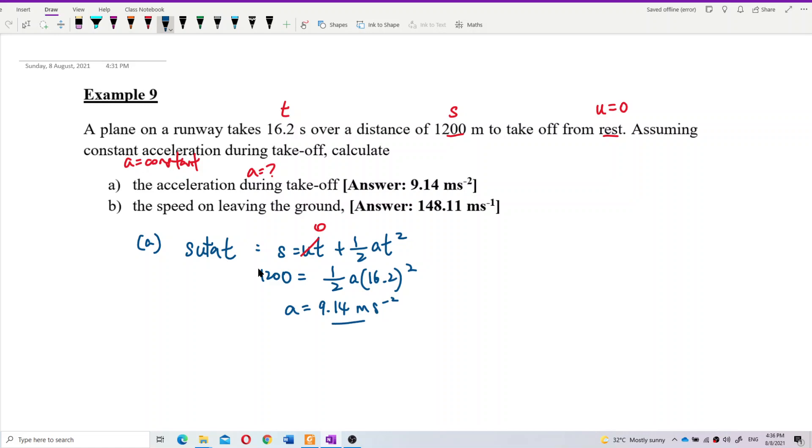Now, how about question B? To take off. What is the speed on leaving the ground? The plane is trying to fly off the ground. So when leaving the ground, this is the final speed we need to find. What is the final velocity?